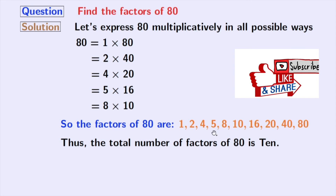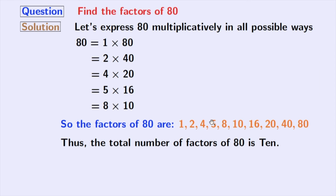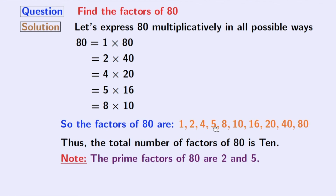Now give a close look at these factors. Among these numbers, 2 and 5 are prime numbers because these numbers do not have any other divisor than 1 and that number itself. So we can say that the prime factors of 80 are 2 and 5.